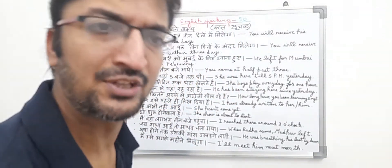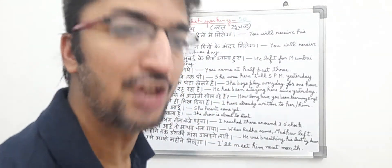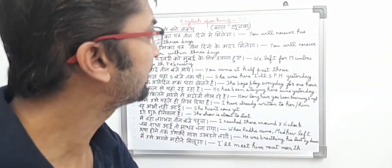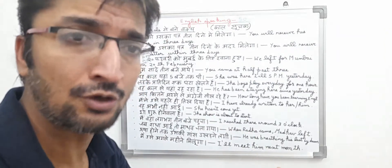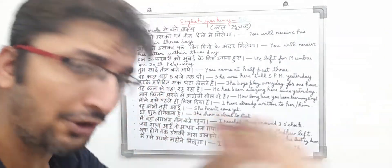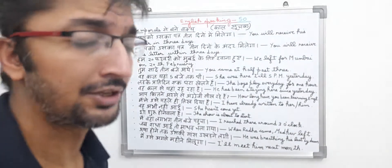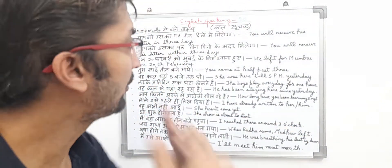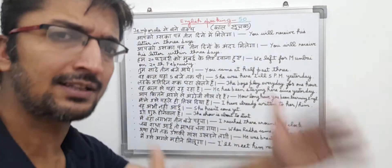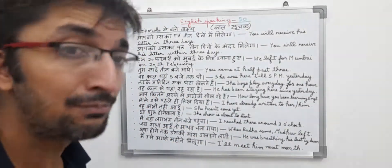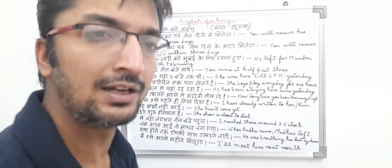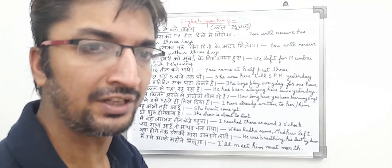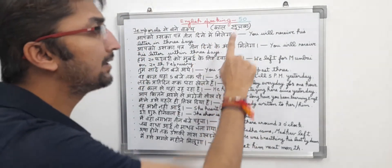Hello friends, my name is Ankur and welcome back to my channel. Friends, recently we had started our English speaking course, and in that course I had covered 49 lessons. In part 49, I had discussed about the use of temporals and correlatives. So today we are going to start English speaking part 50, and we are going to discuss about how to use temporals in our English language.